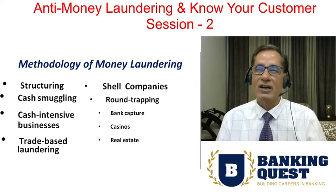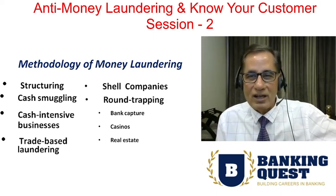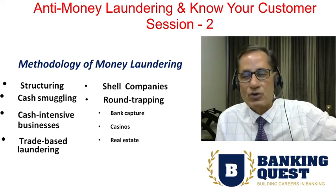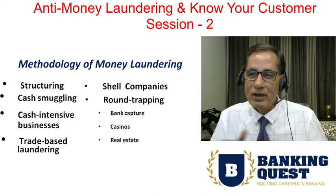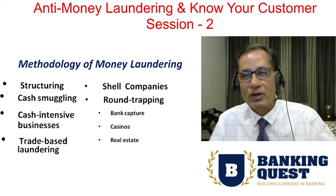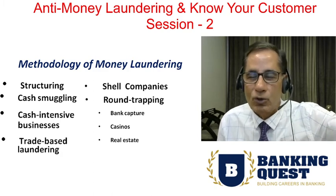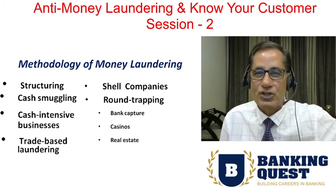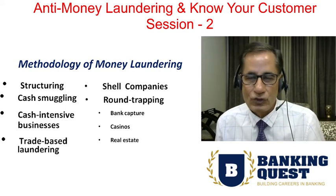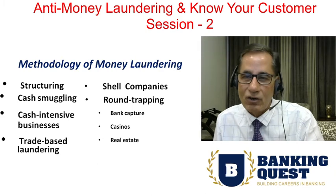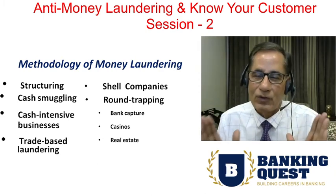The next methodology of money laundering is round trapping. Taking the example of Bank of Baroda's Ashok Vihar branch: money went from India to Hong Kong, from Hong Kong to Dubai, from Dubai to Congo, from Congo to Mauritius, and from Mauritius it came back to India through the banking system. The money which was dirty in the Indian economy has come back to India as clean money through round trapping.